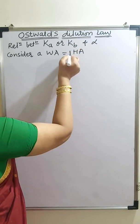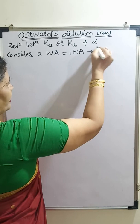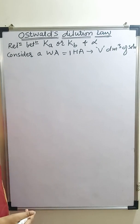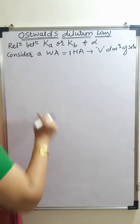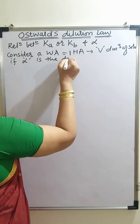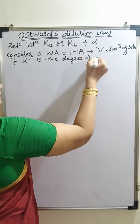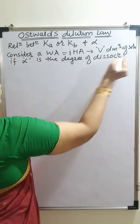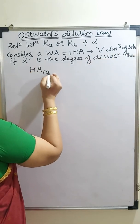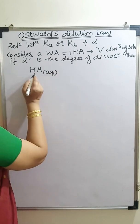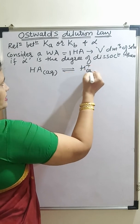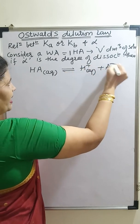I will consider 1 mole of HA and I will dissolve this in V dm³ of the solvent. To know the degree of dissociation extent, I have to dissolve that in water. If alpha is the degree of dissociation, it will dissociate: HA aqueous — as this is a weak electrolyte — giving H⁺ aqueous and A⁻ aqueous.